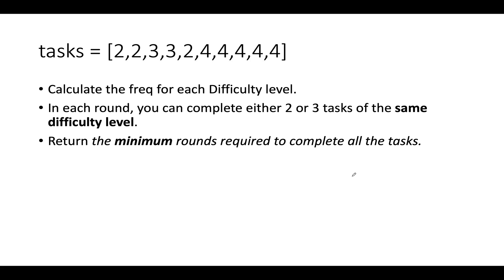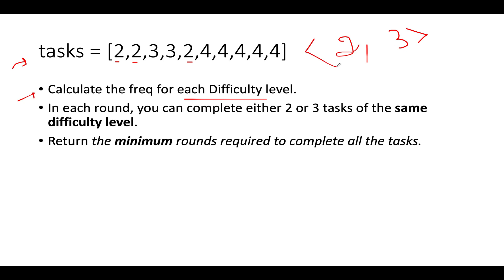Let's get started with the example. The tasks given are: 2, 2, 3, 3, 2, 4, 4, 4, 4, 4. The first thing that comes to mind is to create a frequency map of the various difficulty levels. Difficulty 2 occurs three times, difficulty 3 occurs two times.